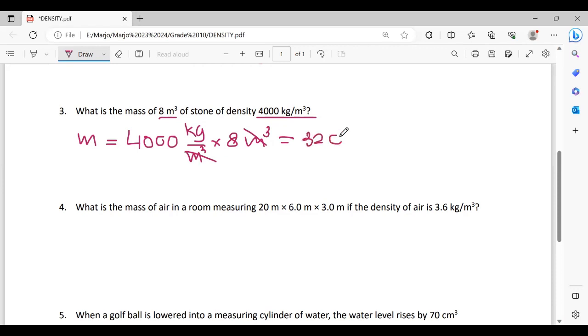Next, number four: What is the mass of air in a room measuring 20 meters times 6 meters times 3 meters, if density of air is 3.6 kg over meter cube? We need to calculate first volume. So volume is 20 times 6 times 3, so volume equals 360 meters cube.